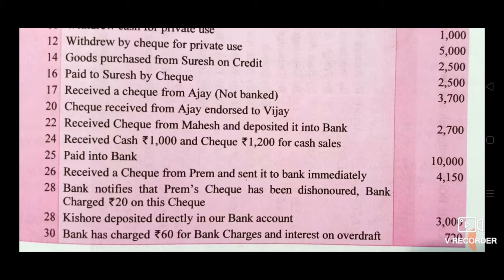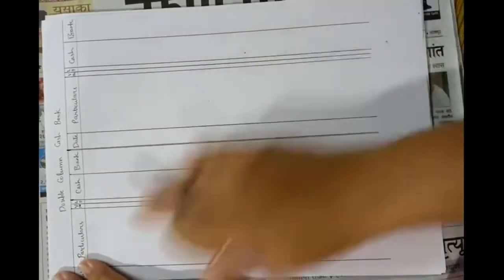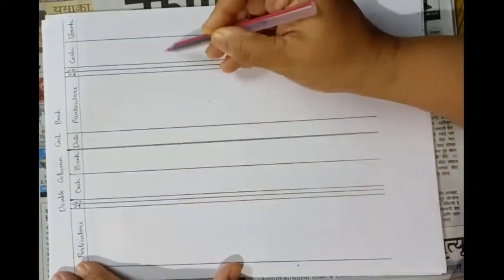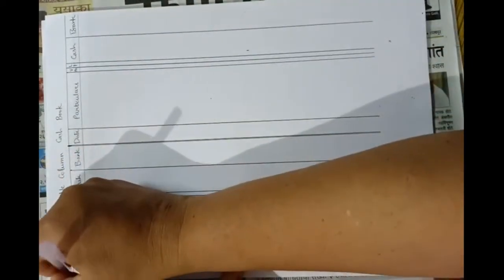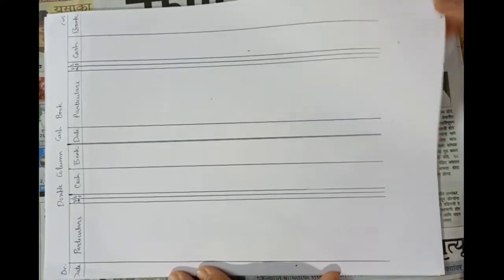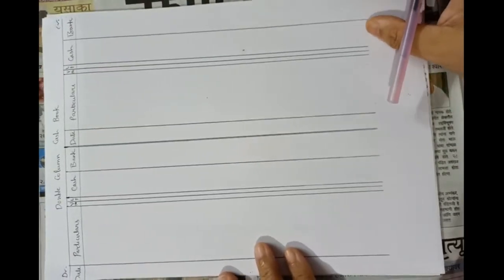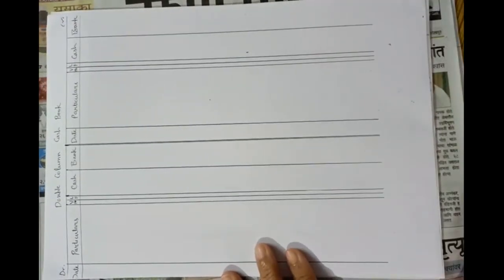So now we have to enter these transactions in the cash book and where necessary we have to pass journal entries. We will prepare a double column cash book — that is, a two-column cash book with cash and bank columns. This is the debit side and this is the credit side. We will pass necessary journal entries where asked.